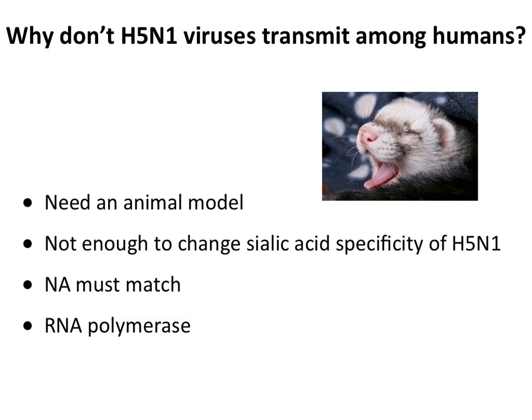Even if you change the hemagglutinin to match alpha-2,6, the neuraminidase — which cleaves sialic acids off the cell as the virus leaves — won't match alpha-2,6 well enough to allow the virus to leave efficiently. So you'd have to change the neuraminidase as well. In addition, the RNA polymerase of avian strains doesn't replicate well in mammalian cells, requiring a couple of amino acid changes there too. So there are many determinants of transmission.